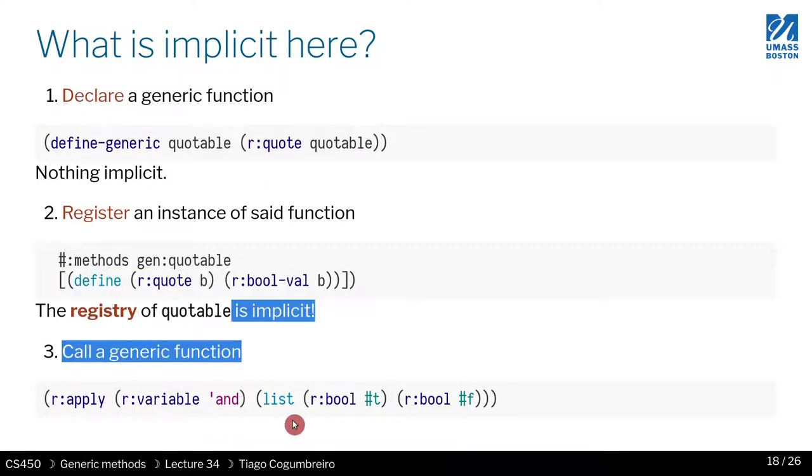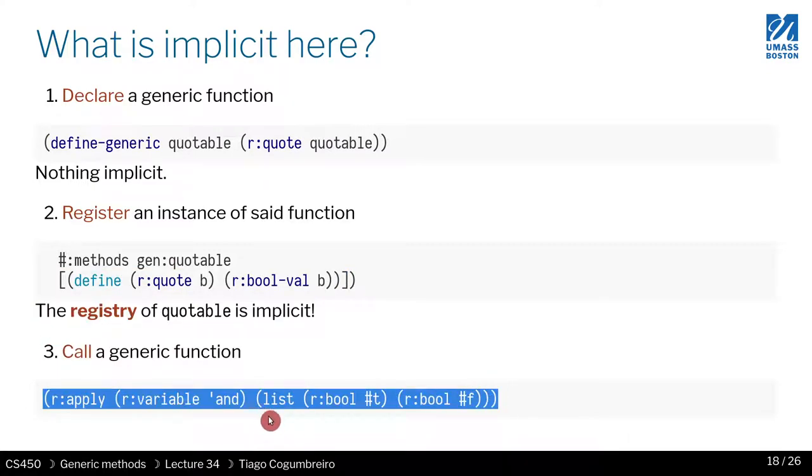structure to be called when the parameter being dispatched is found to be of that particular struct? Finally, we need a way to call. So here we're just showing the argument of a quote. But how do we call a certain quote? A generic method.